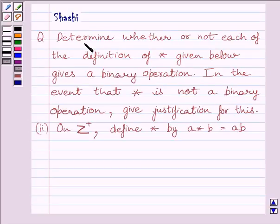Question says, determine whether or not each of the definition of star given below gives a binary operation. In the event that star is not a binary operation, give justification for this.